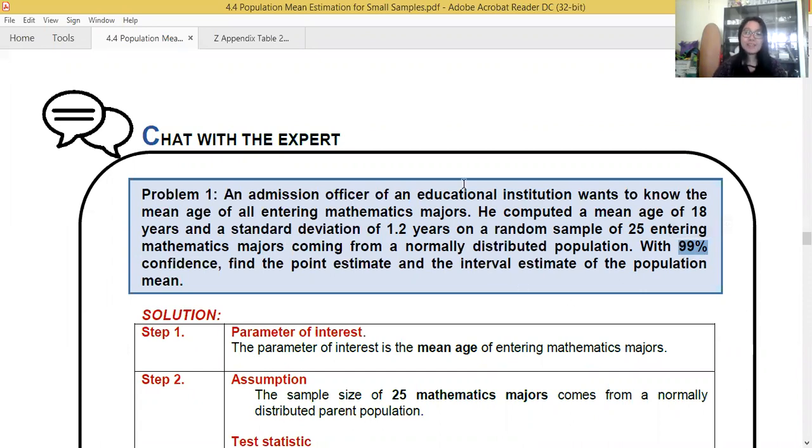Next, step three, given. We have our N is 25. So what's our degree of freedom? You subtract one. Our degree of freedom is 24. Next, what else? Standard deviation is 1.2 years. And the mean. The mean is 18 years. So our point estimate is equal to the sample mean. So our point estimate is also 18 years old.